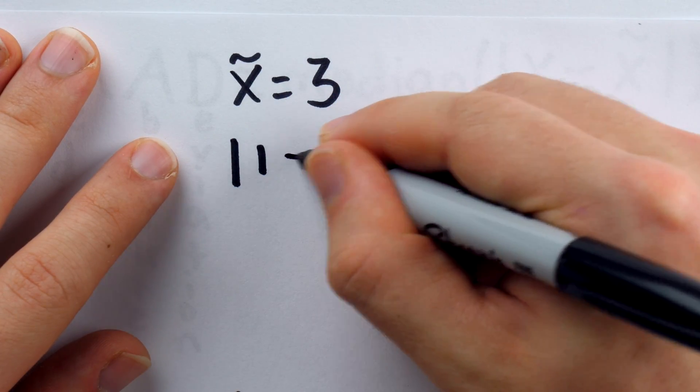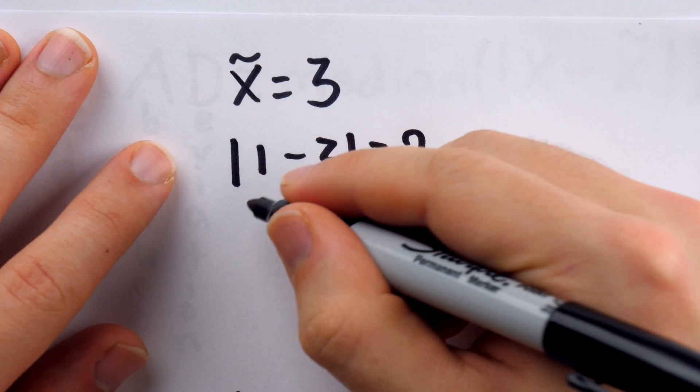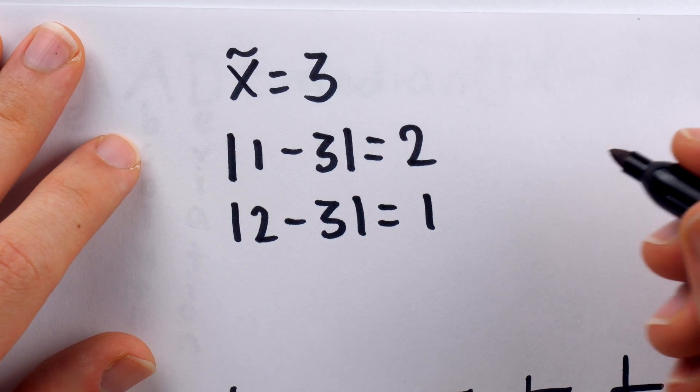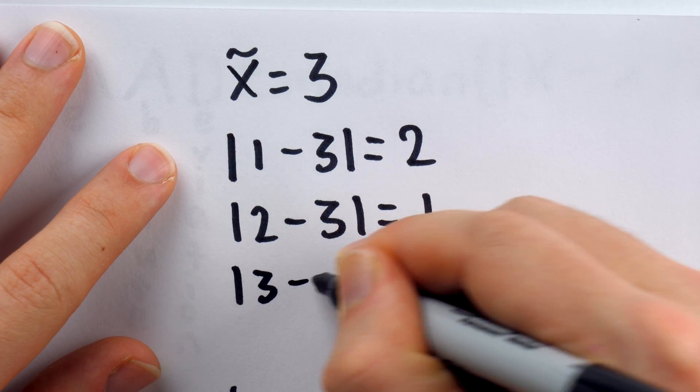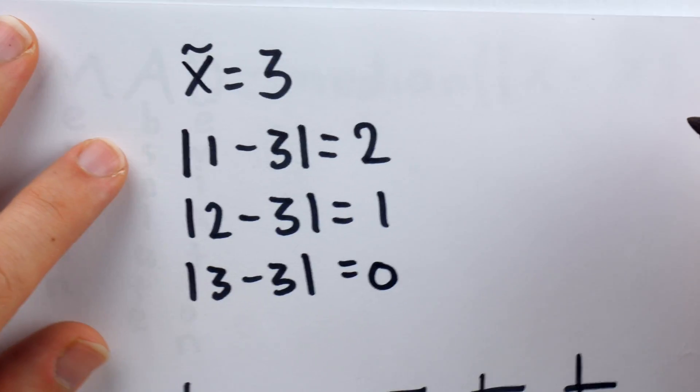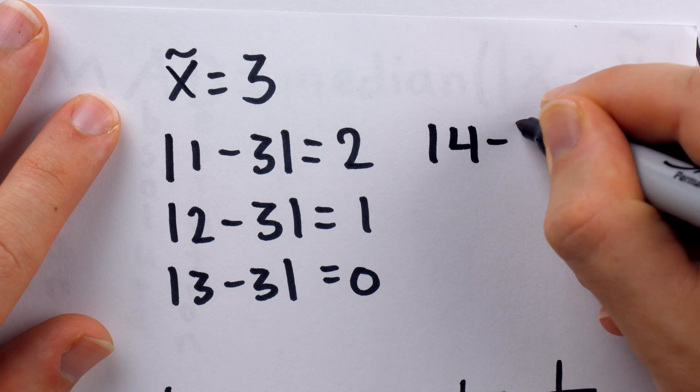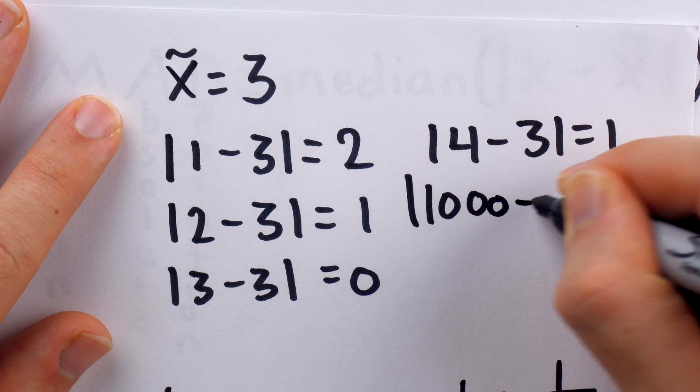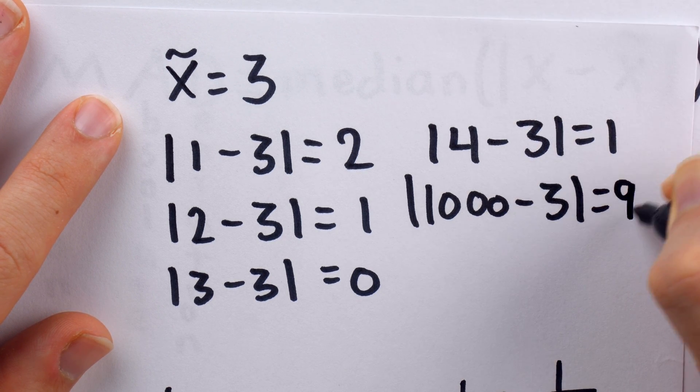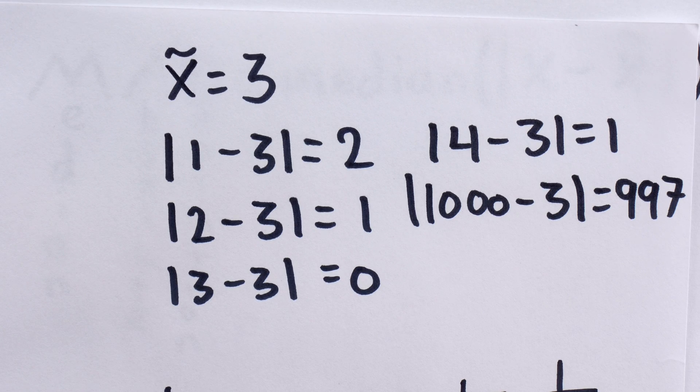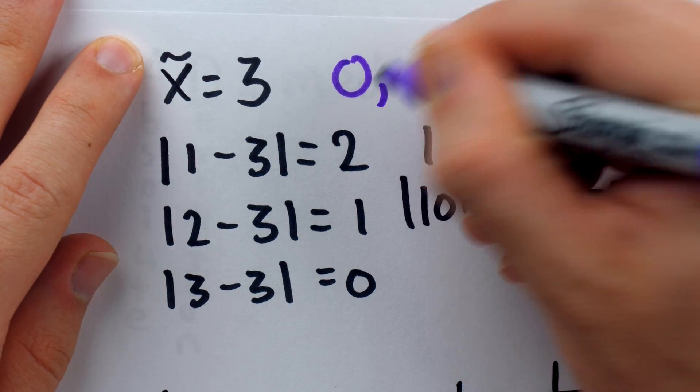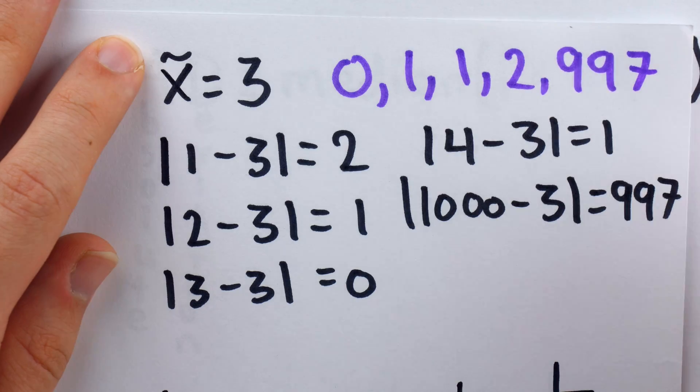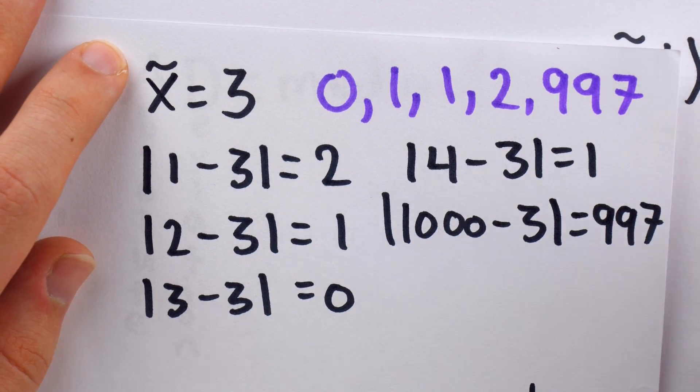Then, we have to calculate the absolute values of the differences of each data point with the median. The first data point was 1, so we would have 1 minus 3. The absolute value of that is 2. The second data point was 2, so we would have the absolute value of 2 minus the median of 3. Absolute value of that is 1. The third data point was 3, so the absolute value of 3 minus 3, which is 0. The fourth data point was 4, so we would have the absolute value of 4 minus 3. That's 1. And then, the last data point was that big 1,000, and so we would have the absolute value of 1,000 minus 3, and that is 997. The median absolute deviation of the data set, then, is the median of this set of absolute values: 0, 1, 1, 2, 997. What's the median of these absolute values? It's the number in the middle, which is 1.